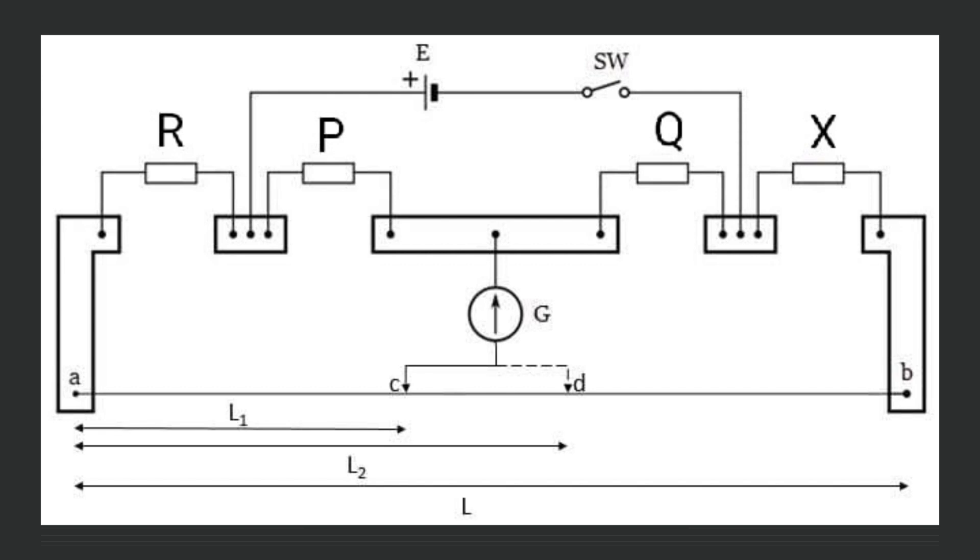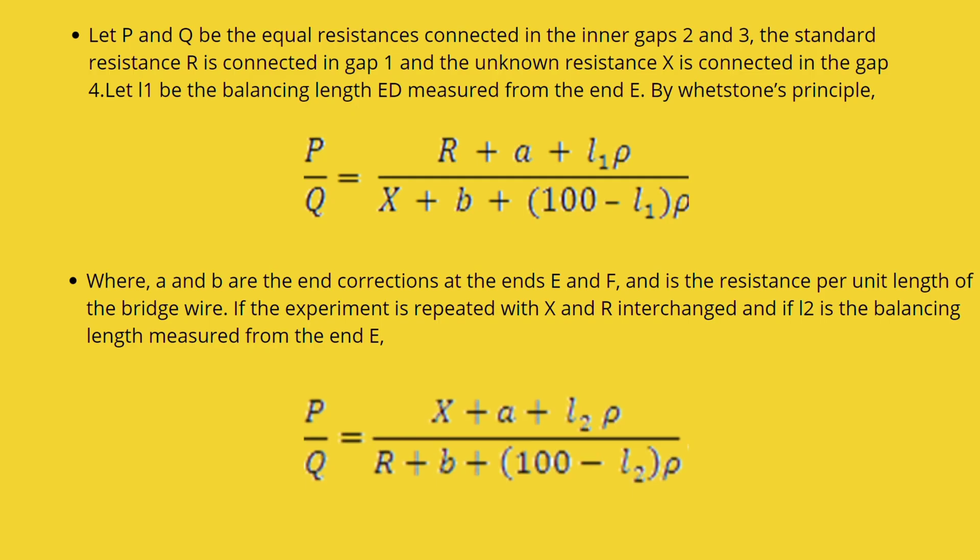By moving jockey or sliding contact on a slide wire, we can get the exact point at C. So, L1 is the distance of sliding contact from point A and total length L is 100 cm. By Wheatstone's principle, R plus A plus L1 rho divided by X plus B plus 100 minus L1 rho equals P by Q.